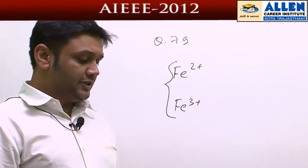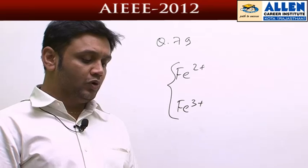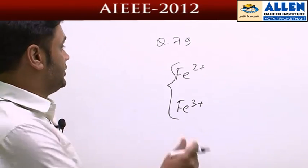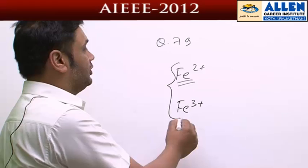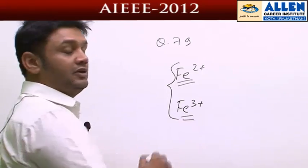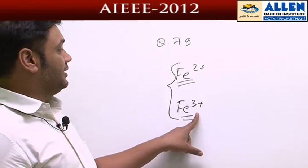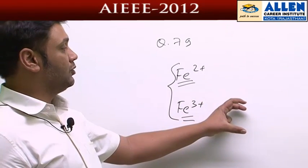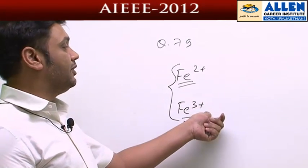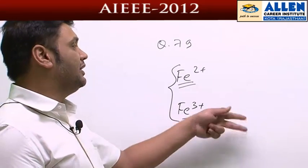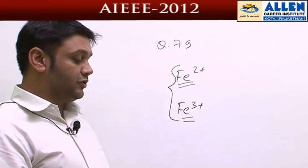The first option says that ferrous compounds are more easily hydrolyzed. This means the compound has more interaction with water compared to ferric, which seems incorrect because ferric ion is more attracted towards water molecules. Its polarizing power for water molecules is high.